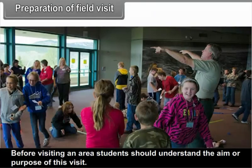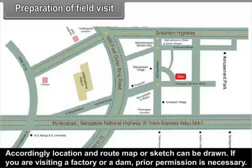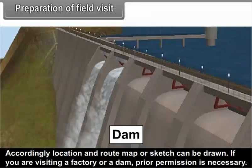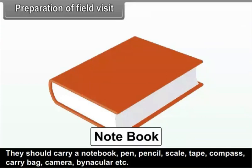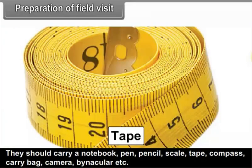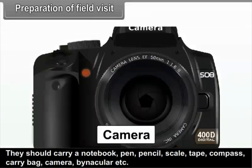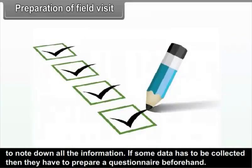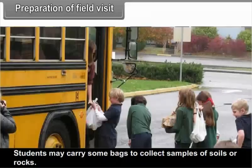Preparation for a field visit: Before visiting an area, students should understand the aim or purpose of the visit. Accordingly, a location and route map or sketch can be drawn. If visiting a factory or dam, prior permission is necessary. Students should carry a notebook, pen, pencil, scale, tape, compass, carry bag, camera, binoculars, etc., to note down all information. If data has to be collected, they should prepare a questionnaire beforehand. Students may also carry bags to collect samples of soils or rocks.